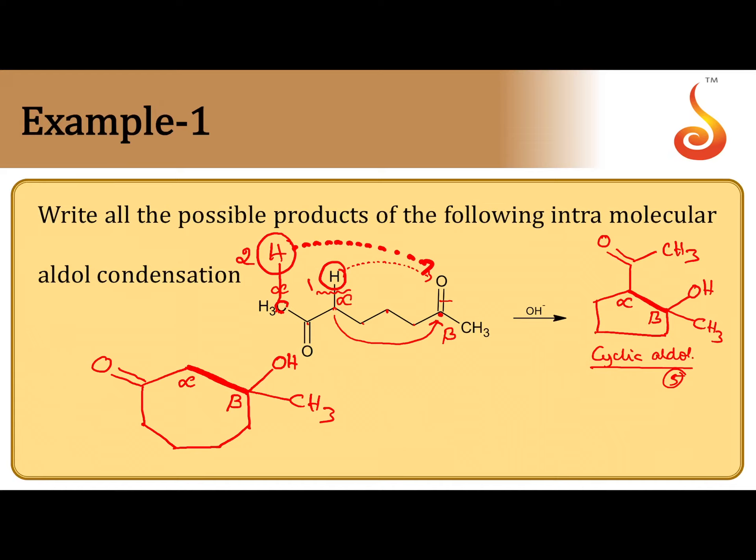You observe children, at beta carbon OH is present. This is also beta hydroxy ketone. That is why cyclic aldol or ketol. This is 7-membered ring.